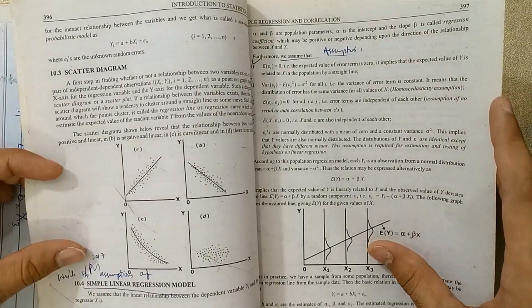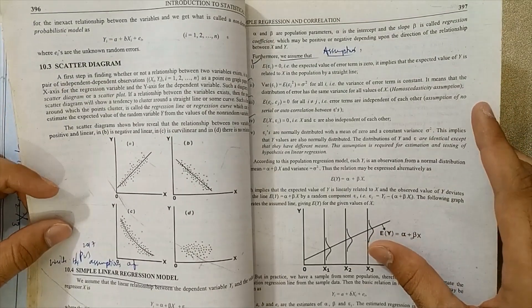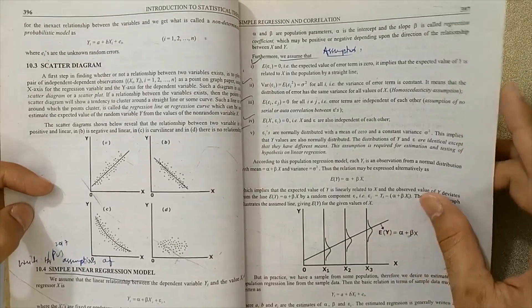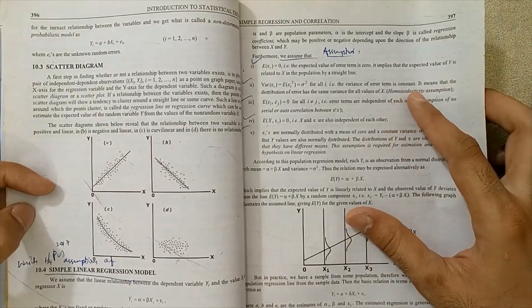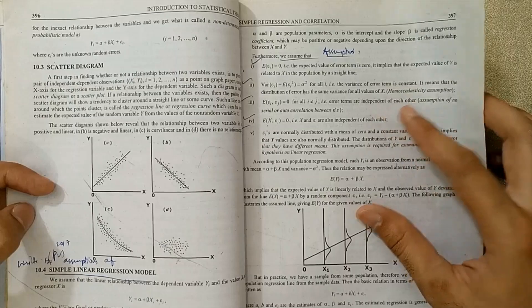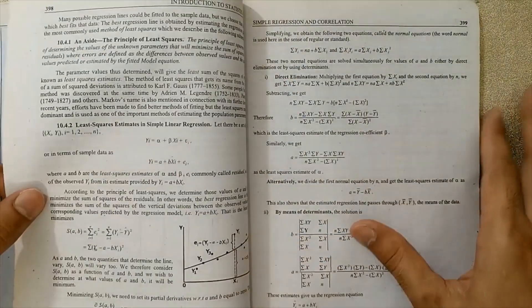Now, what is the scatter diagram? Very important. Next, simple linear regression model—this topic is very important for exams and also in the future. Features and assumptions are also very important for you.